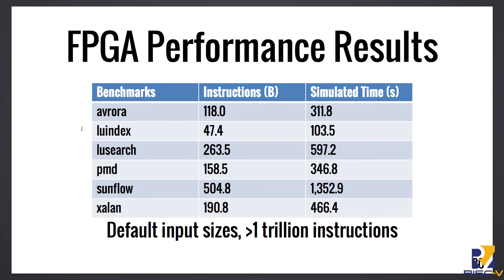We took the subset of the Dacapo benchmarks that we were running and executed those on an FPGA with Rocket Chip, and as you can see these are actually quite long-running workloads. Together these are over a trillion instructions, which means that you can now use this to actually evaluate long-running Java workloads in a way that would have been difficult on a software simulator, for which a trillion instructions is a lot of cycles to simulate.